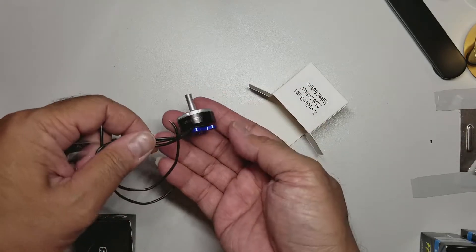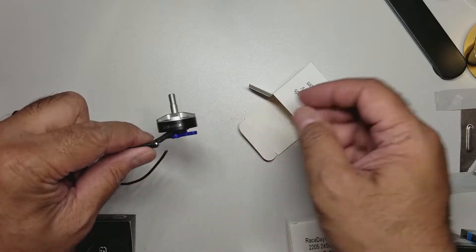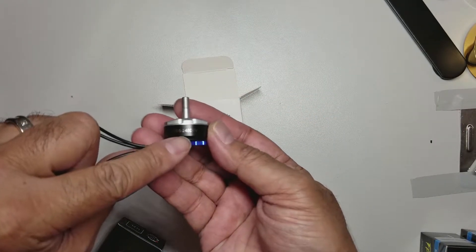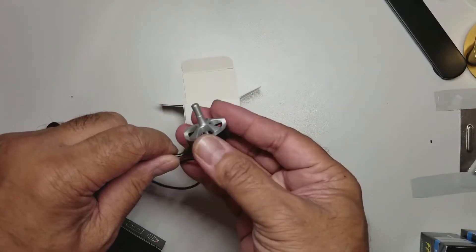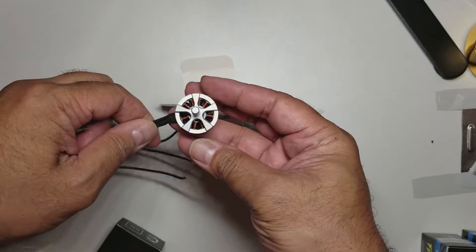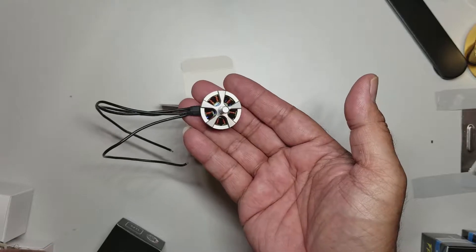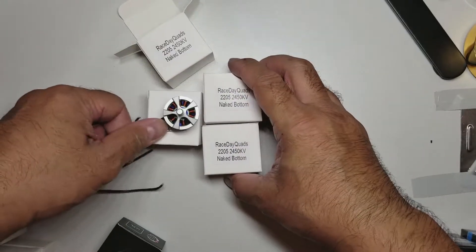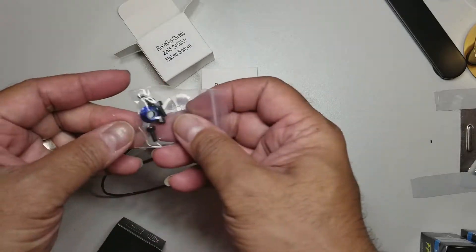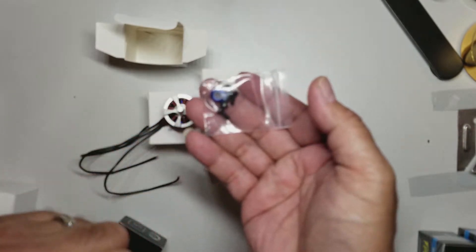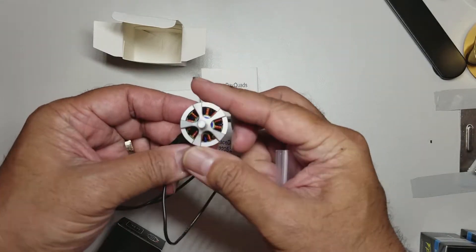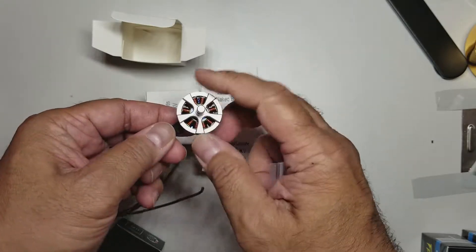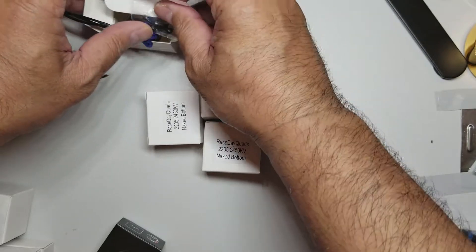I think I burnt out a motor on that one and they're really old motors. So these are the Race Day Quads naked bottom badass, that's what they're called. They're 2205 2450 kV and they should do the job. Budget motors, these are $13.99 or $13.69 or something. I'll put links to all this stuff down below in the description. It looks like it comes with motor mount screws and the lock nut for the shaft. Notice here it's not hollow shaft, but I hear they're really good.